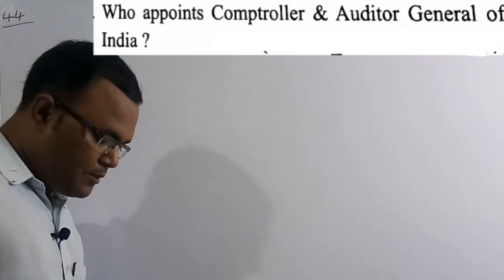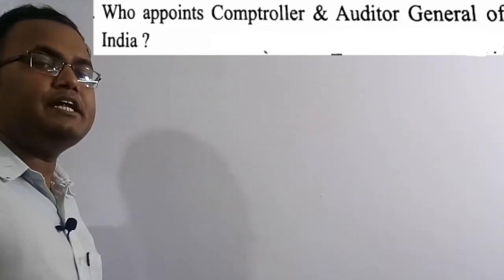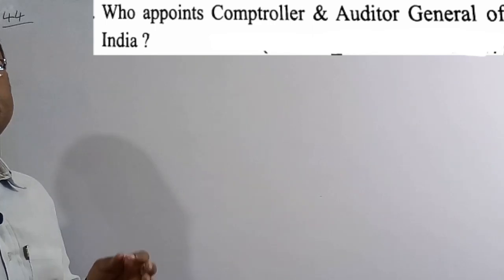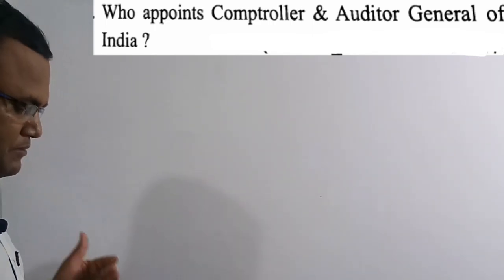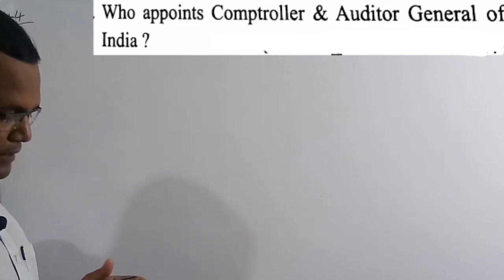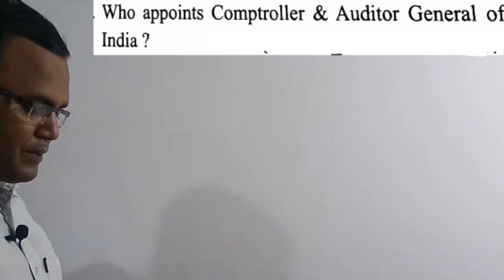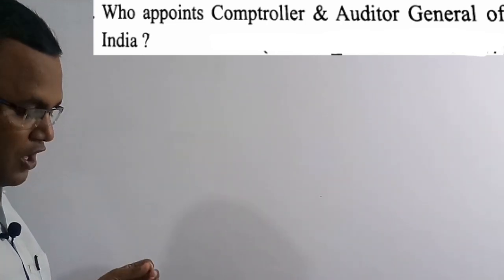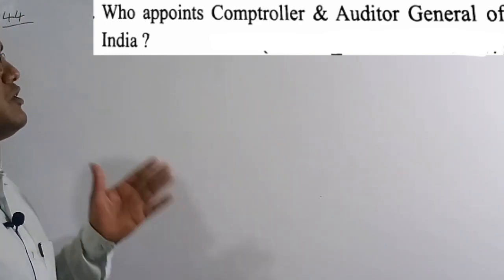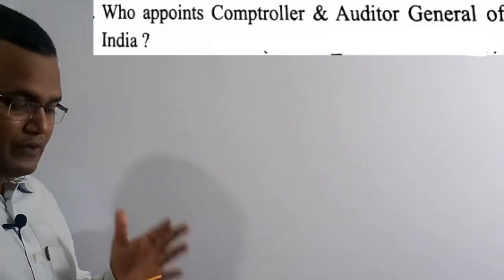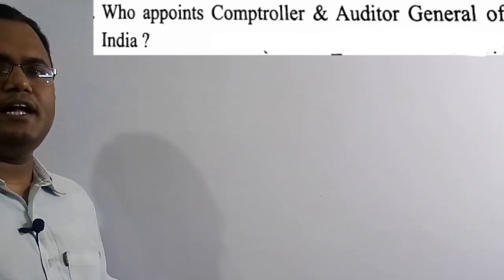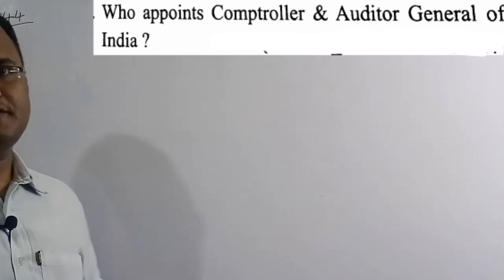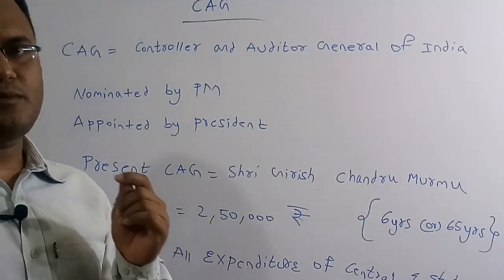Question 44: Who appoints the Comptroller and Auditor General of India, also known as CAG? Option A: minister of finance, Option B: prime minister, Option C: committee of prime minister and leader of opposition, Option D: president of India. The correct answer is Option D, the President of India appoints the CAG.